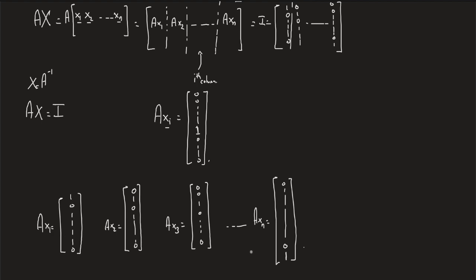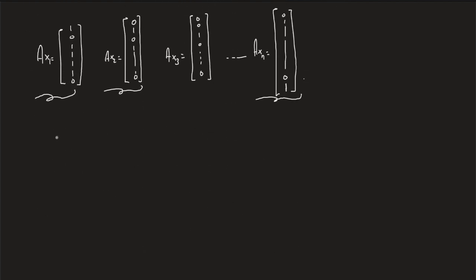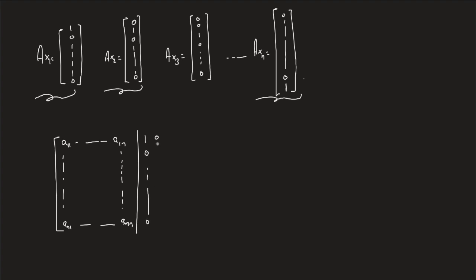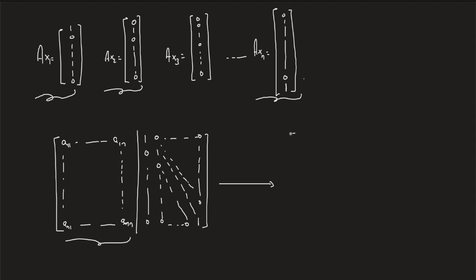So we're solving N linear systems of equations, which means we can form an augmented matrix for this problem. We place A on the left — entries A11 through ANN — and on the right-hand side we stack the identity columns. After forming this augmented matrix, we row reduce the coefficient matrix to upper triangular form, just as in the previous lecture.